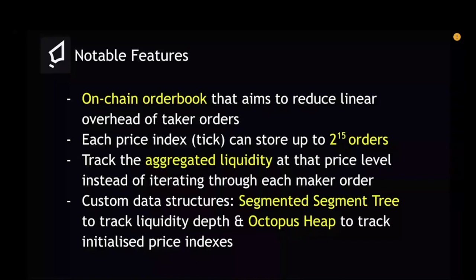For every price index — similar to price ticks in Uniswap — each price index can store up to 2 to the power of 15 orders, due to the custom data structure they used. They track the aggregated liquidity at the price level instead of iterating through each maker order. The custom structures they use are the segmented segment tree, which tracks liquidity depth, and the octopus heap, which tracks initialized price indexes — used when jumping from one price index to find the next one that has liquidity.